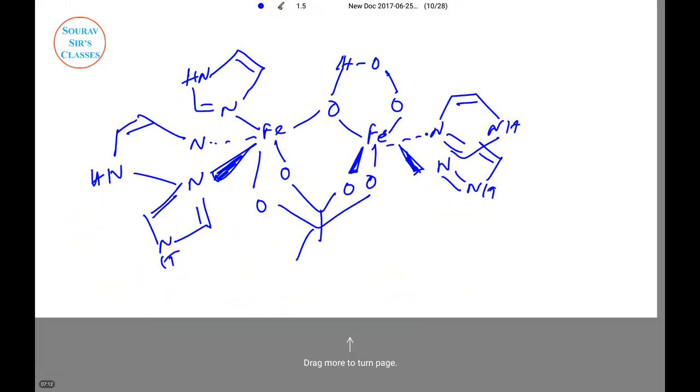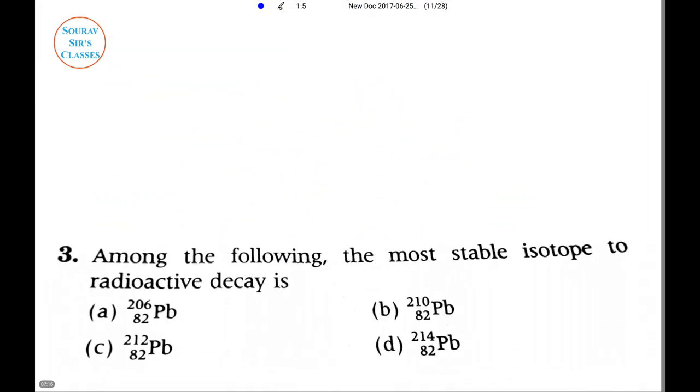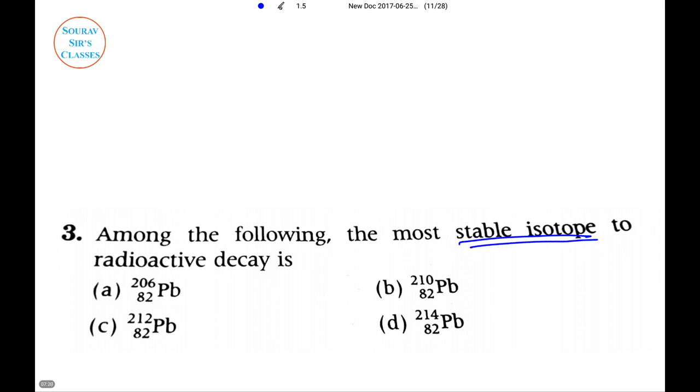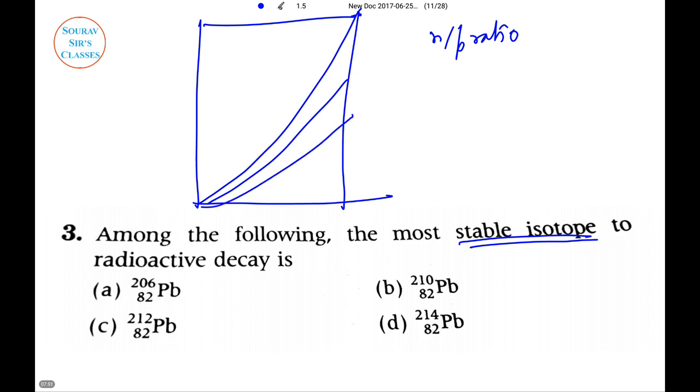Now we are proceeding to the next question. Here they have asked about the most stable isotope to radioactive decay. Remember that there is a belt of stability, a neutron-proton graph of stability. If we just draw the neutron-proton graph of stability it goes like this, and the belt of stability is drawn here. According to this special graph, a nuclei having n/p ratio and lying inside the belt of stability - here 1:1 neutron to proton ratio, and here 1.4:1 is the ratio, 1.25:1 is the ratio.